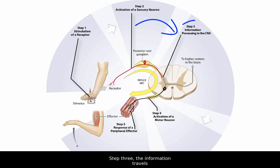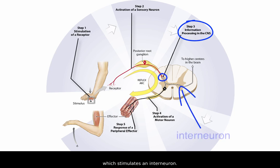Step 3, the information travels to your CNS for processing. Excitatory neurotransmitters are released by the sensory neuron which stimulates an interneuron. This interneuron, shown here in white, integrates this information from the sensory neuron with other arriving stimuli and initiates step 4,